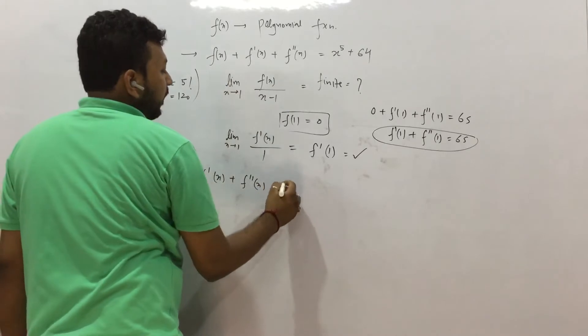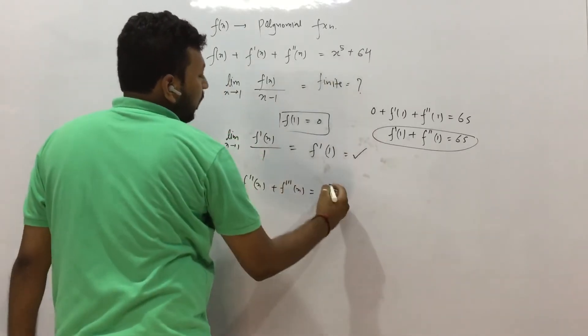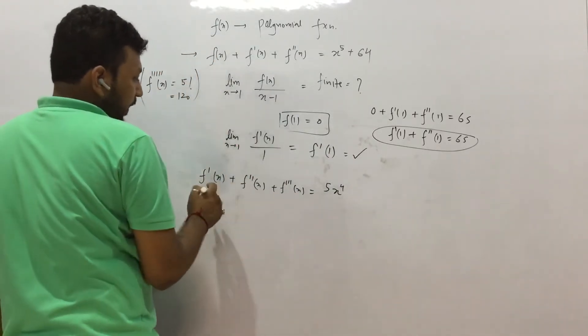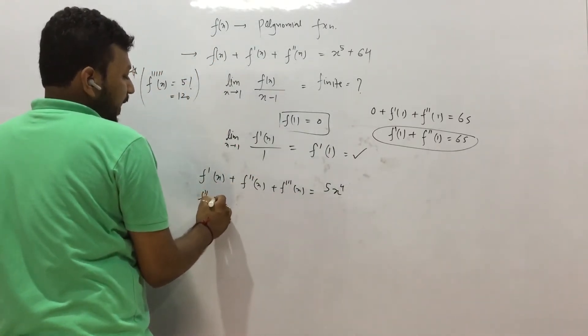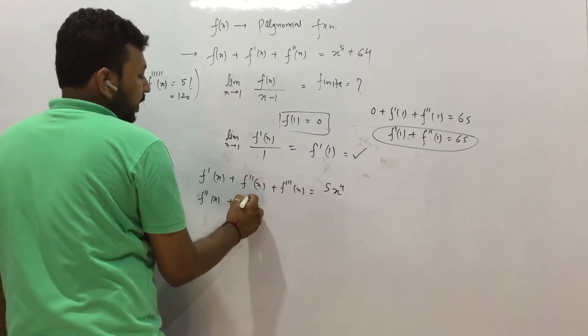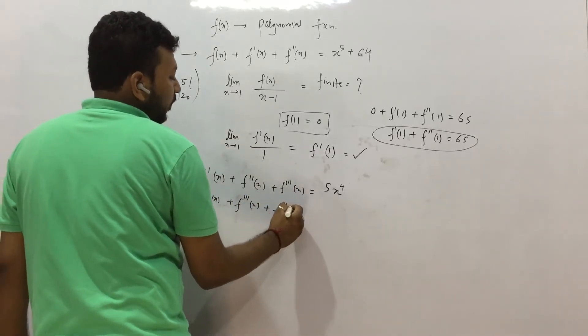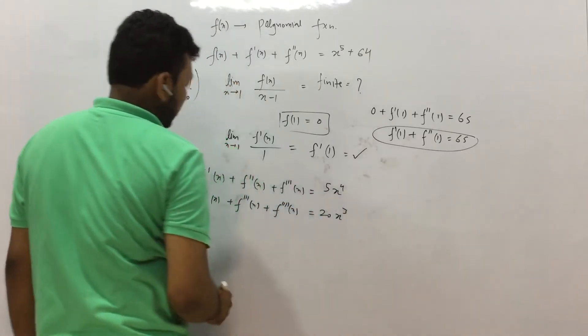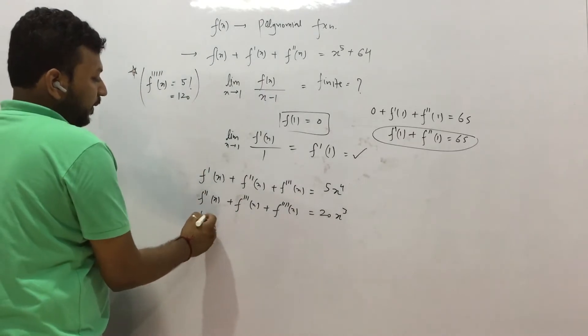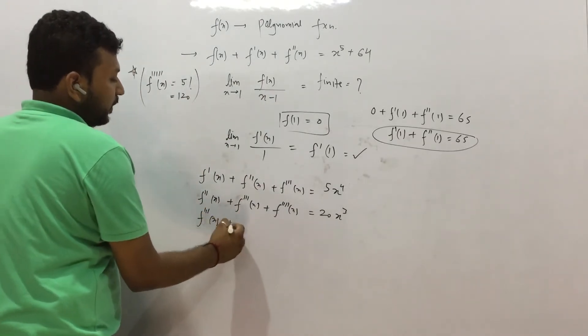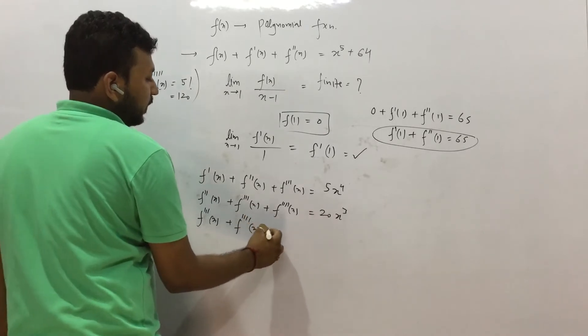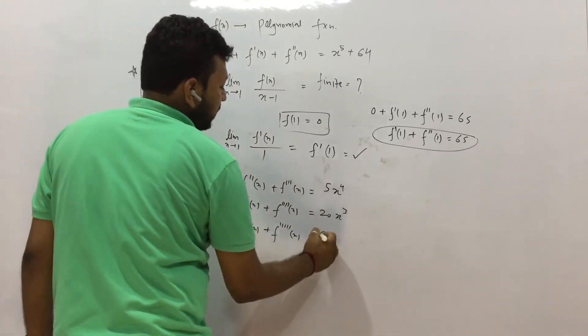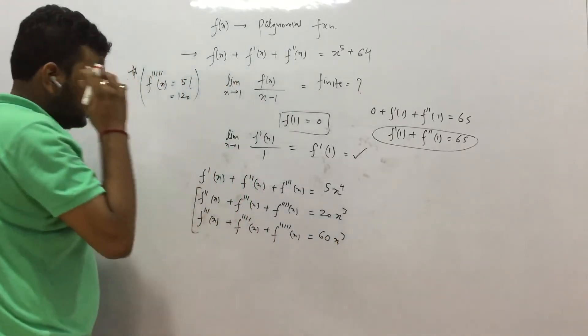You have to understand this. Because the maximum power of f(x) is x^5, that means the derivative will be 5x^4. Again derivative is 5×4×x^3 and so on. So the fifth derivative will give you this. Let us do the derivative once. We have f'''(x) = 5x^4. Let us do derivative again, f⁴(x) = 20x³. Let us do the derivative again, f⁵(x) = 60x².